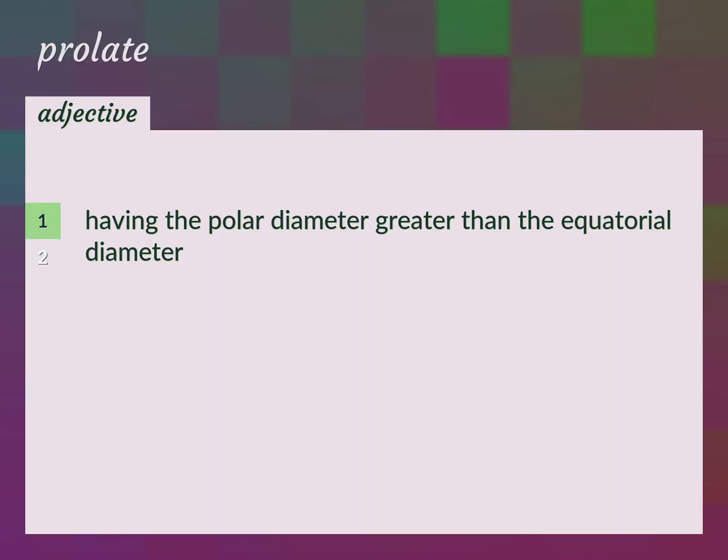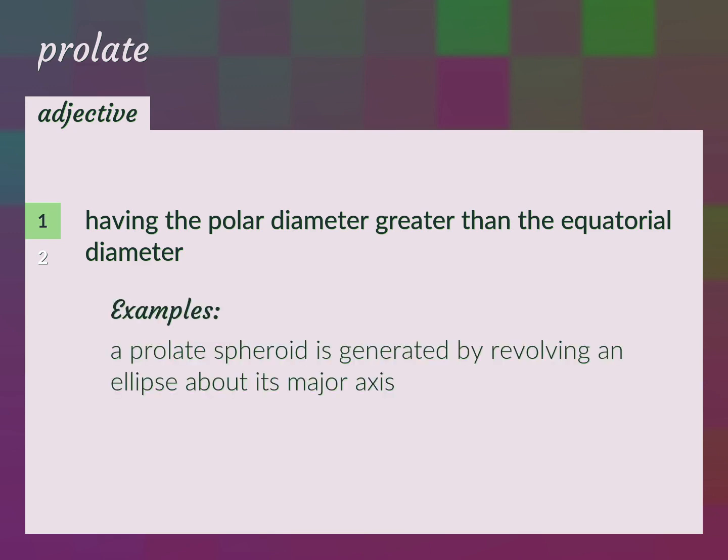Having the polar diameter greater than the equatorial diameter. A prolate spheroid is generated by revolving an ellipse about its major axis.